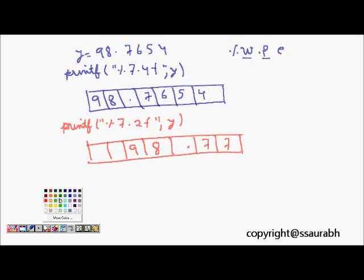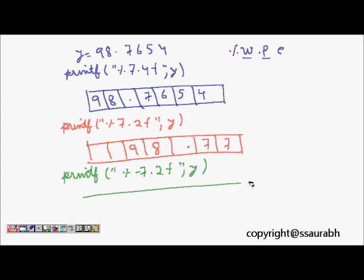Let's say again, so another example is printf % minus 7.2f and y. So this now means it is again the total number of spaces is seven and it is left justified. So we will start from here, so 9 and 8 will come here, and then two digits are for the decimal part, so 7, 7 will come here, and these two parts will be left.